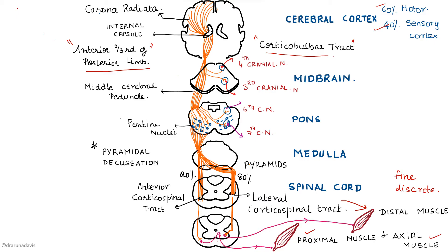So that is about the corticospinal tract. Now that you've understood it, it will be easier to draw. Remember to write these key points: the internal capsule, the pyramidal decussation, and that crossing occurs at two levels.